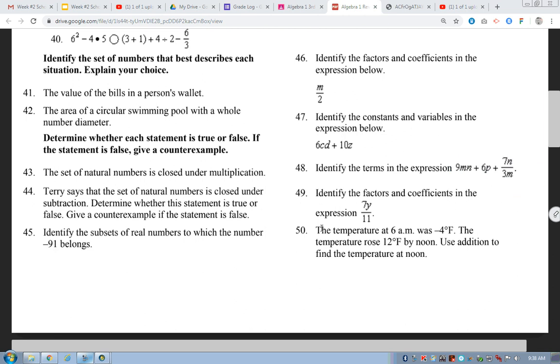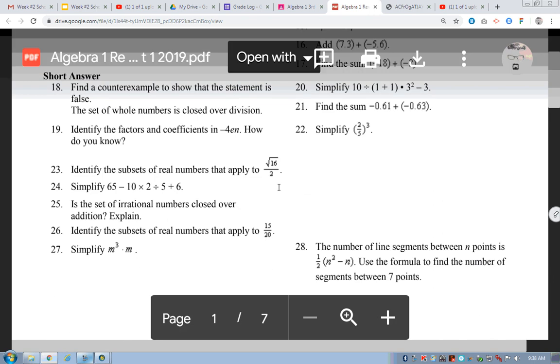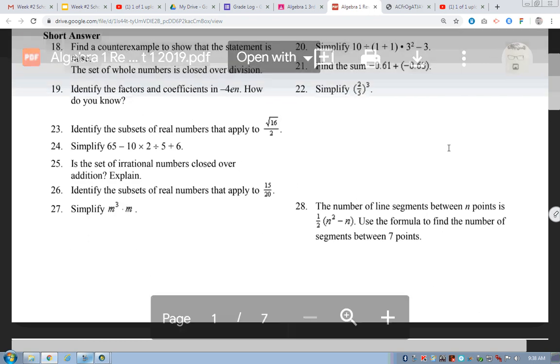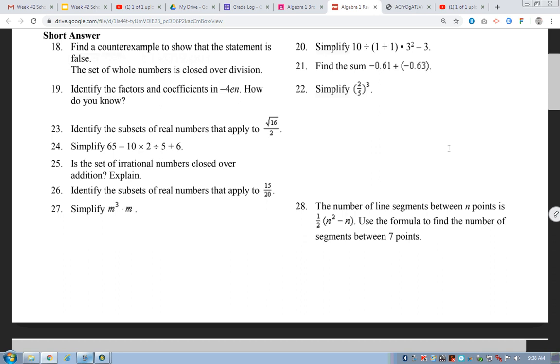Alright. And finally, 27. 27. Let's come back up here. Okay. Simplify m cubed times m. Okay. So, what exponent does this m over here have? Does it have an exponent? Okay. So, there's a 1 there. What do I do with variables? What do I do with their exponents when I'm multiplying same base variables? I add them. So, 3 plus 1 is 4. So, my answer is m to the 4th. Does that answer that for you?